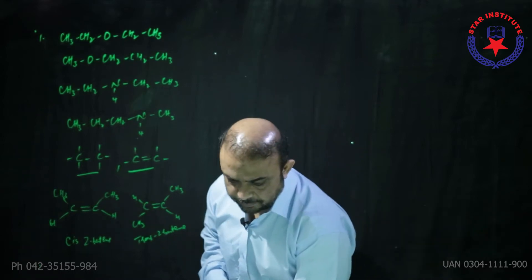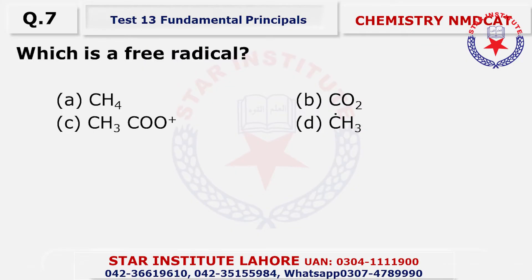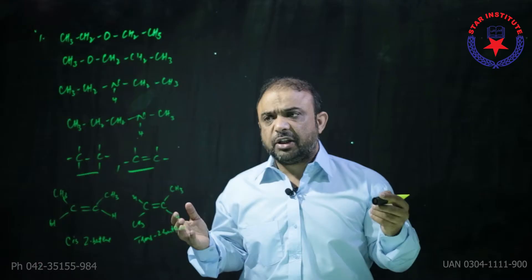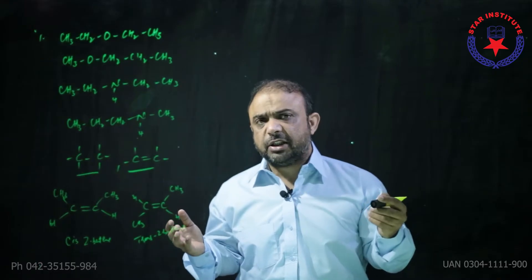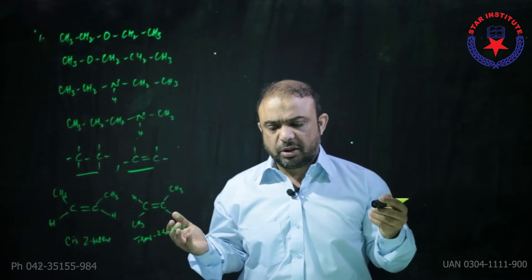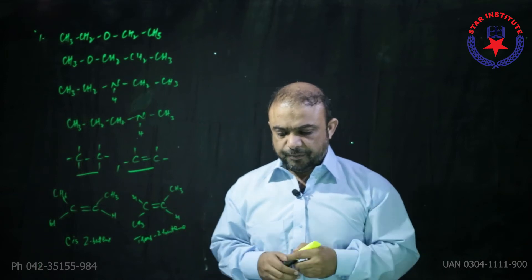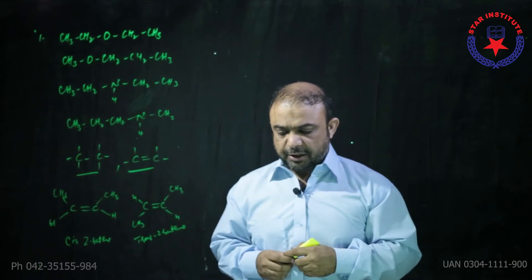Question number seven: Which is a free radical? Look at choice D — the definition of a free radical is a neutral species bearing unpaired electrons. So the choice is D.